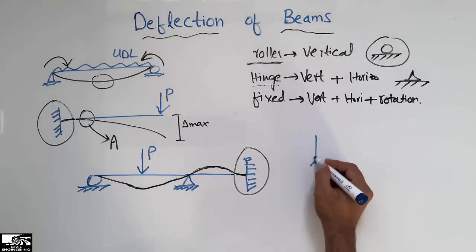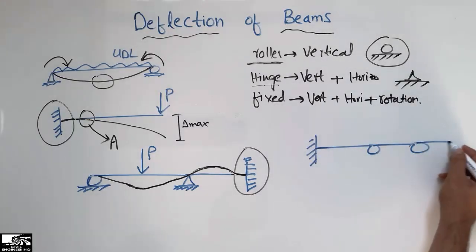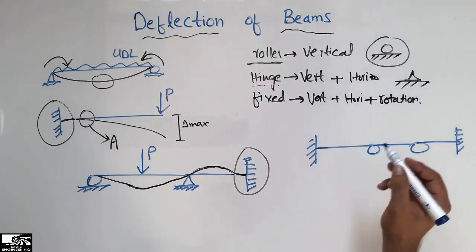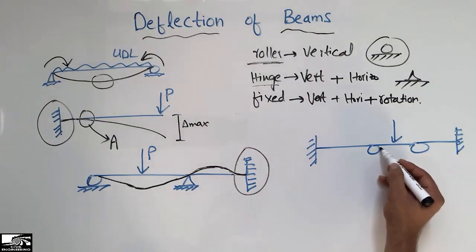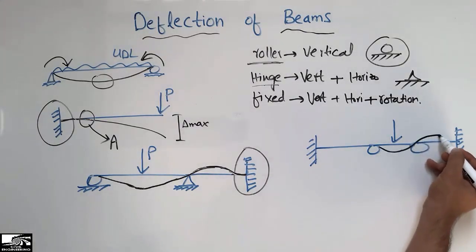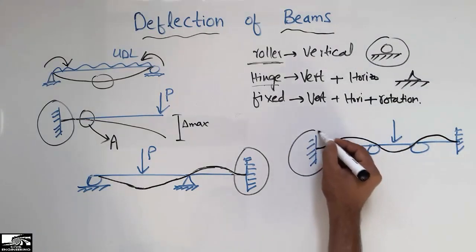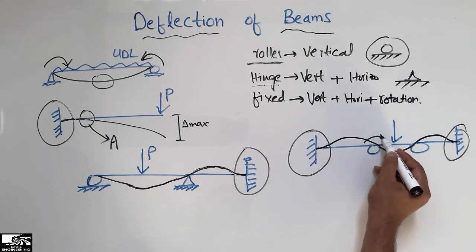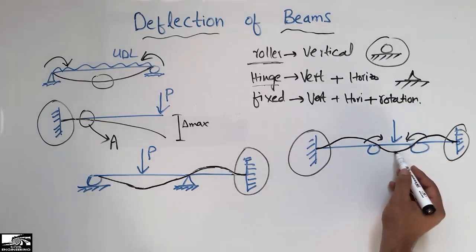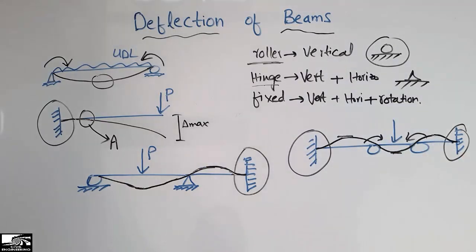Now consider another beam type: a hinge support, then a roller support, then another roller support, and a fixed support at the end, with the load acting between two of the supports. The beam deflects in this shape. There will be no rotation at the fixed support, but rotation occurs at the hinge and roller supports. The maximum deflection can be noticed at three key points.